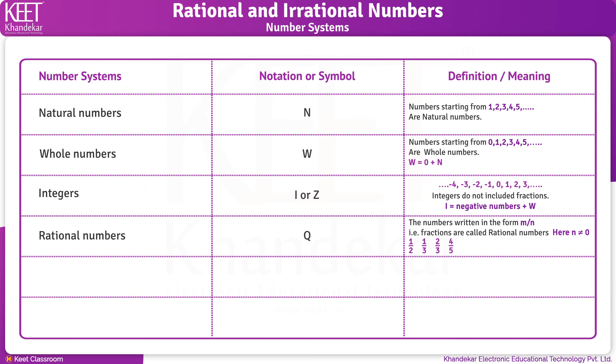Now, the next number system is irrational numbers. No symbol is used to denote it. We define irrational numbers as a number, if written in decimal form, having an infinite number of digits to the right of the decimal point. Such numbers are called irrational numbers.